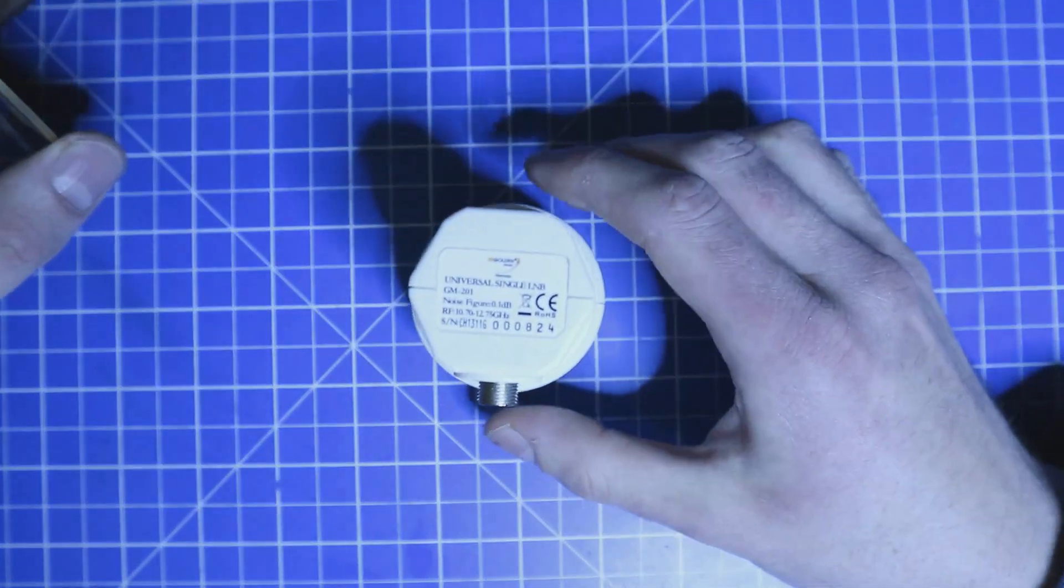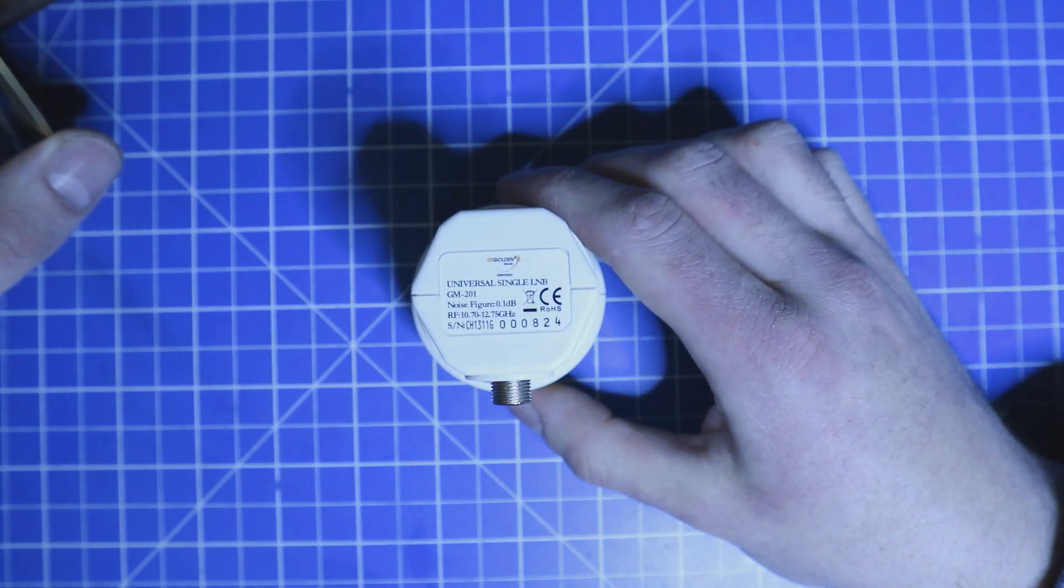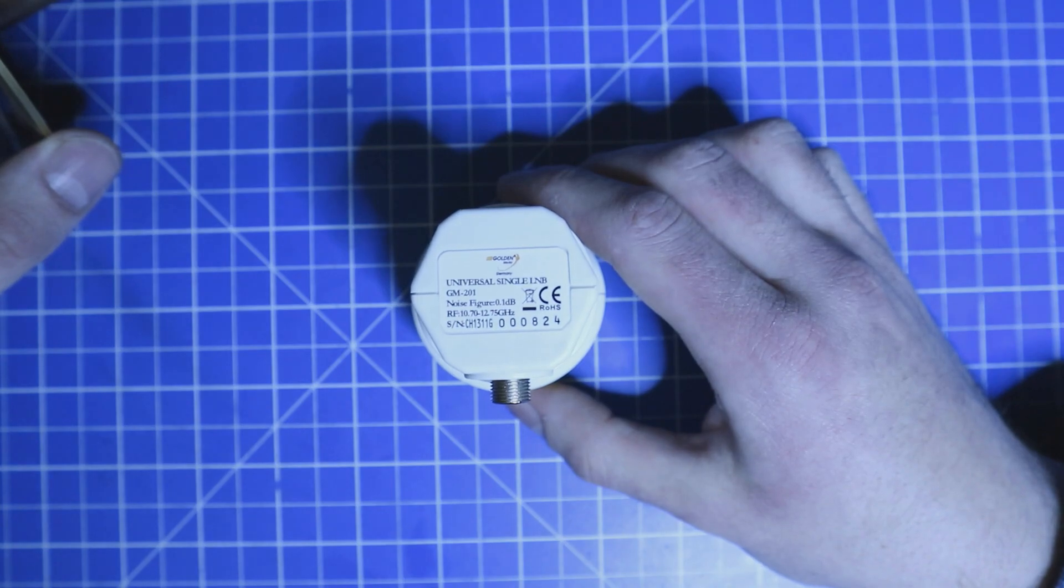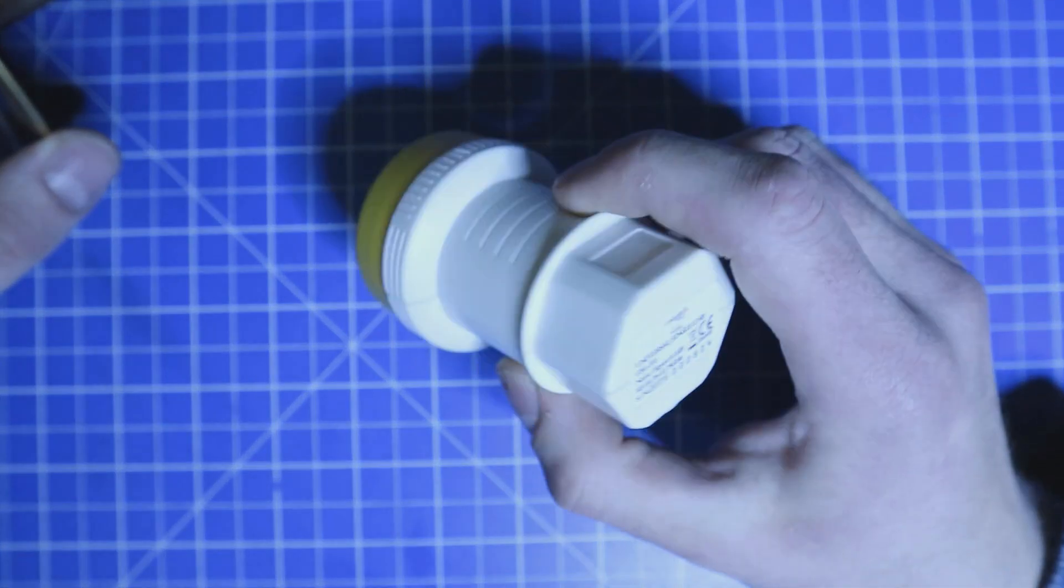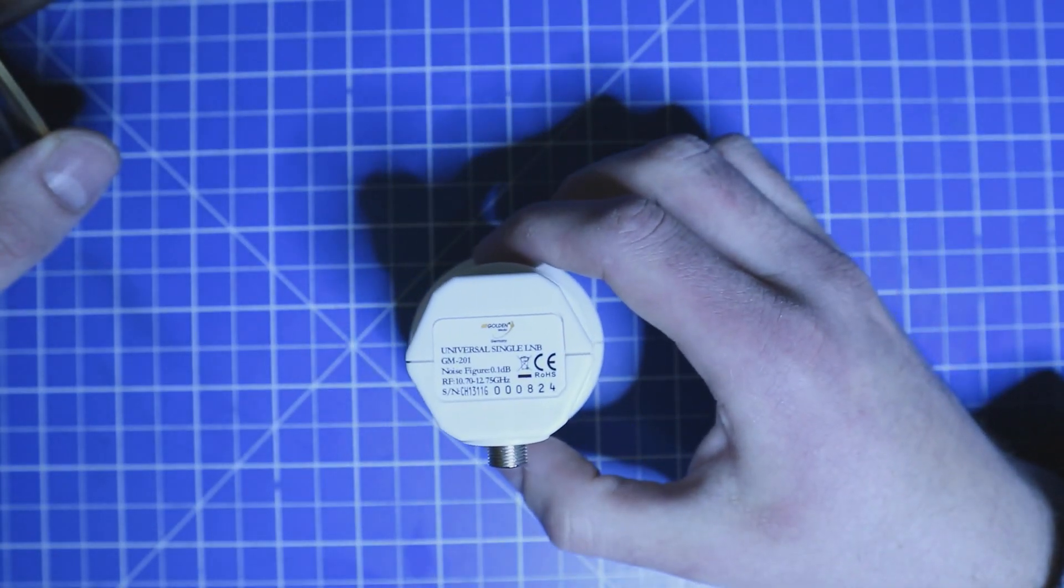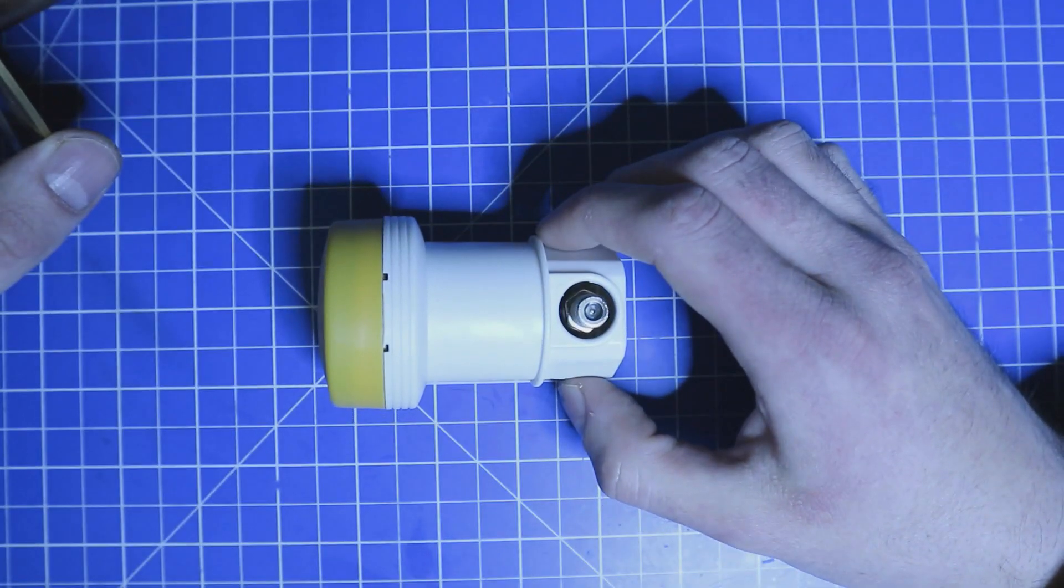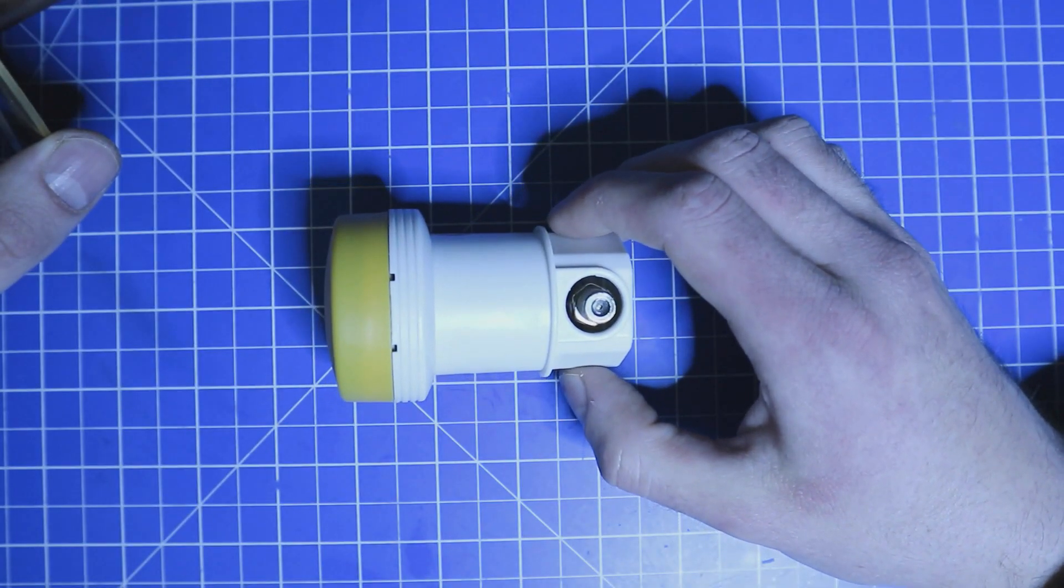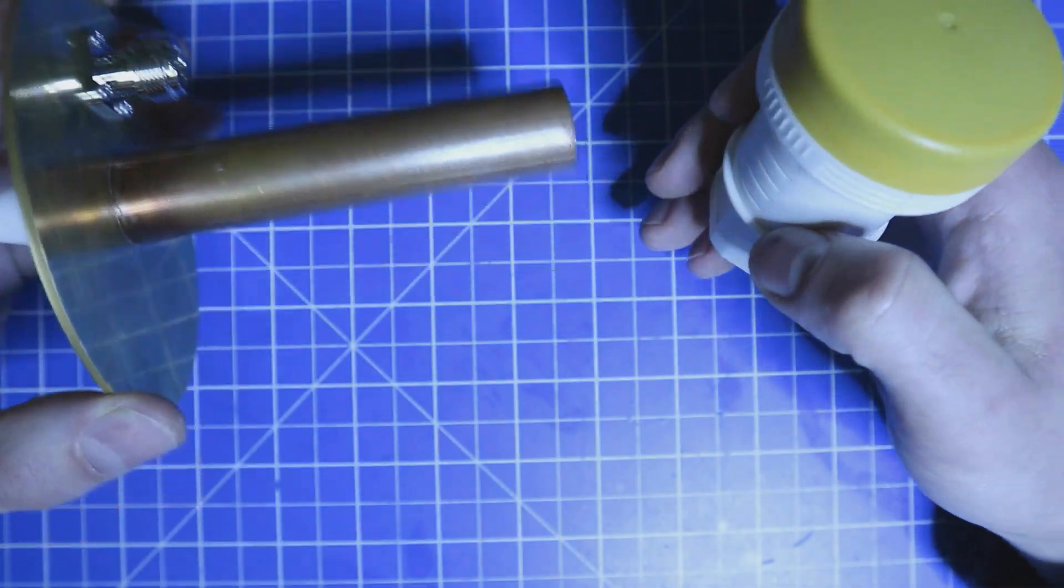In this video I'm going to use a cheap Golden Media GM201 LNB. These are sold for two to three euros on the internet and I'm going to show you some basic ways to mount the LNB onto the waveguide.